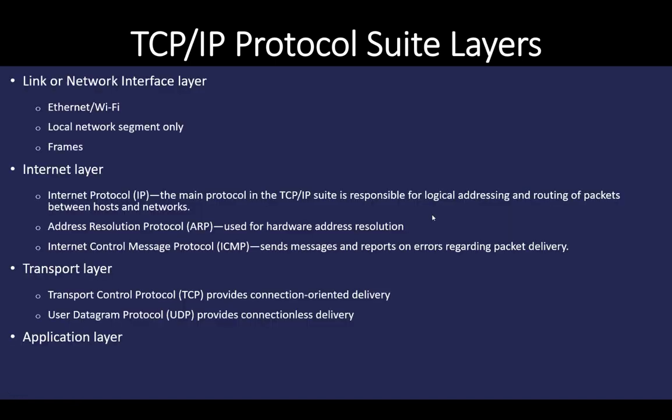The link or network interface layer — sometimes called the physical layer — is where the computer interacts with the network through Ethernet or Wi-Fi. It converts data into frames and makes use of the media: copper, light, or Wi-Fi. The internet layer encapsulates packets into datagrams and handles routing between different networks. Three key protocols used here are IP, the Address Resolution Protocol ARP, and the Internet Control Message Protocol ICMP.